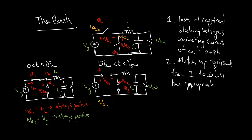Now let's look at VQ1. In state two, Q1 is a short, which means VQ1 must block VG — and again, it's always positive. And IQ2: in state two, IQ2 conducts minus IL. Due to a similar argument for IQ1, if the ripple is smaller than the average, IL is always positive, so minus IL should always be negative.